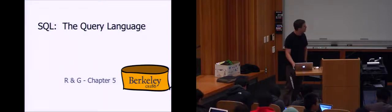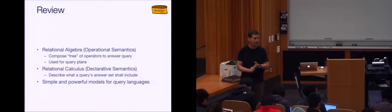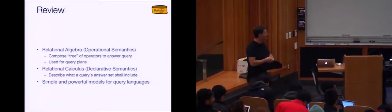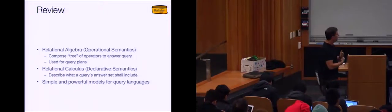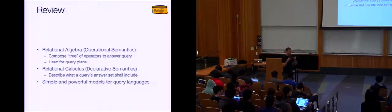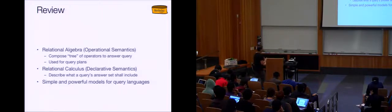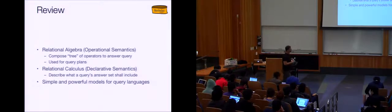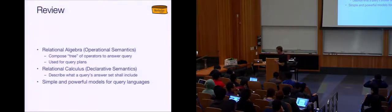Just a bit of review from last time: we talked about the relational algebra in some detail. It has a somewhat operational semantics where you compose essentially a tree or nested description of operators to answer a query — step by step, with big set-oriented tasks. The nice thing about relational algebra is it corresponds quite nicely to our notion of query plans and iterators, but gives it a formal grounding we can use for optimization.